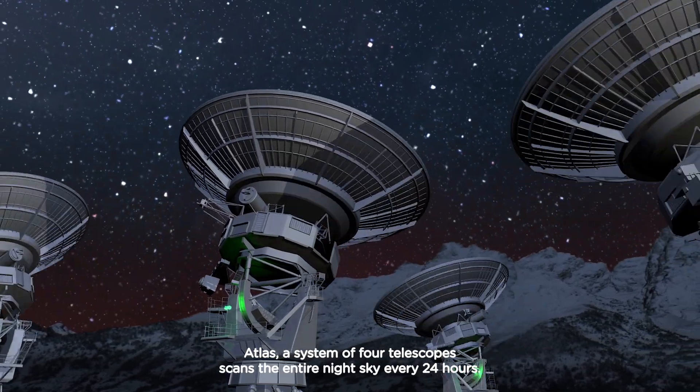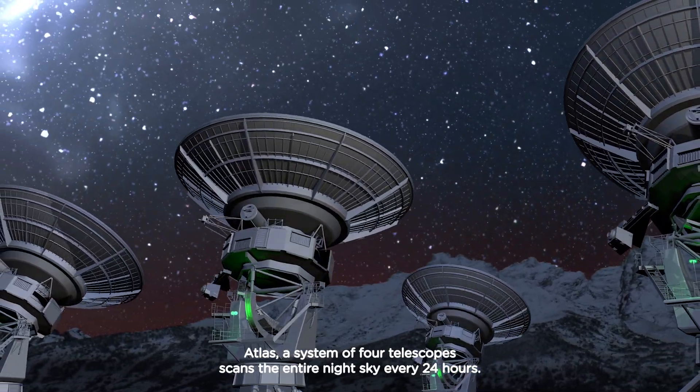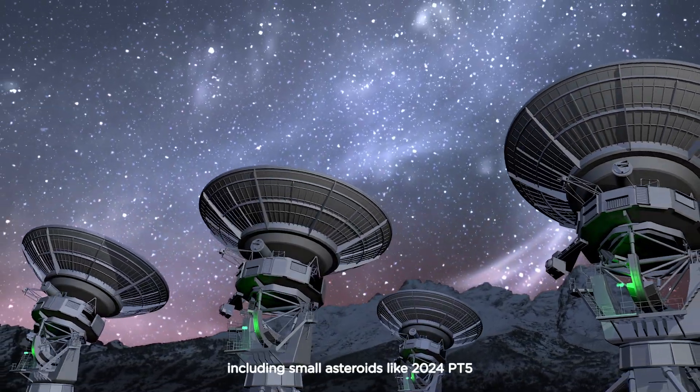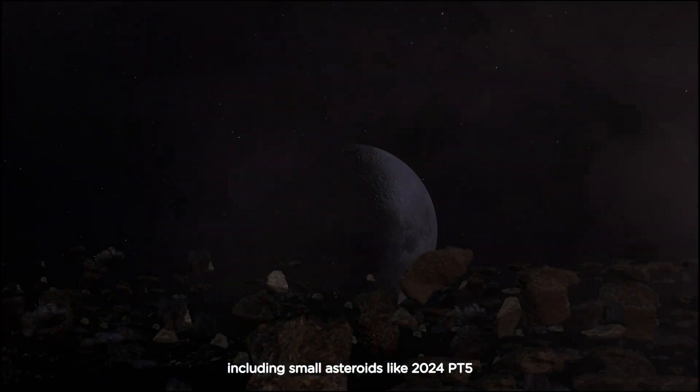ATLAS, a system of four telescopes, scans the entire night sky every 24 hours. This allows it to spot thousands of near-Earth objects, including small asteroids like 2024PT5.